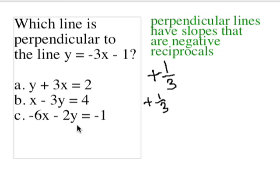Let's just check c here. In c, I move 6x over to the other side of the equal sign. I get a positive 6x. I divide that by negative 2. I get a negative 3. So it looks like a and c are parallel to each other, and b is the line perpendicular to y equals negative 3x minus 1.